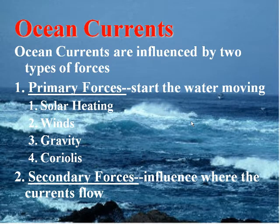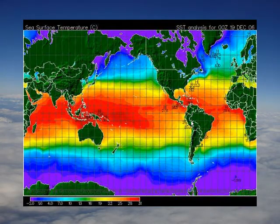The primary forces moving water are solar heating, winds, gravity, and the Coriolis effect. Solar heating and winds drive the surface currents; gravity drives the density-driven deep water currents. The Coriolis effect determines the pattern of flow — clockwise in the northern hemisphere and counterclockwise in the southern hemisphere. These factors drive ocean currents and therefore much of the air circulation patterns as well.